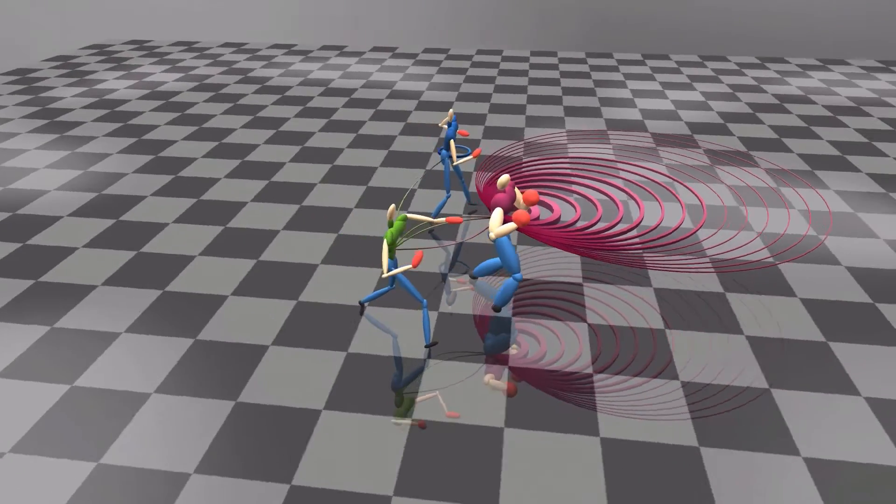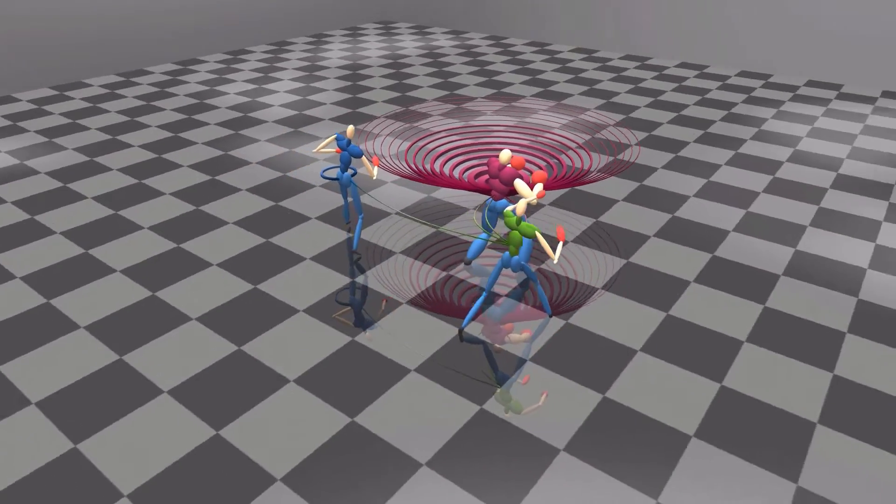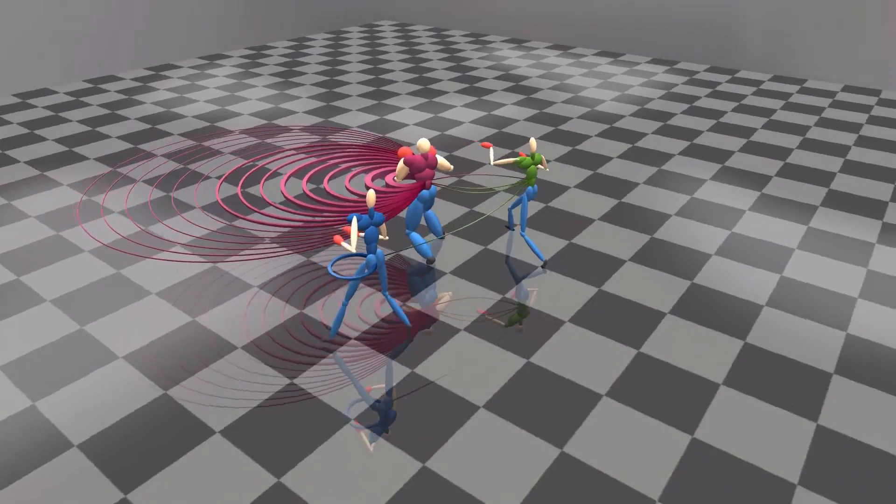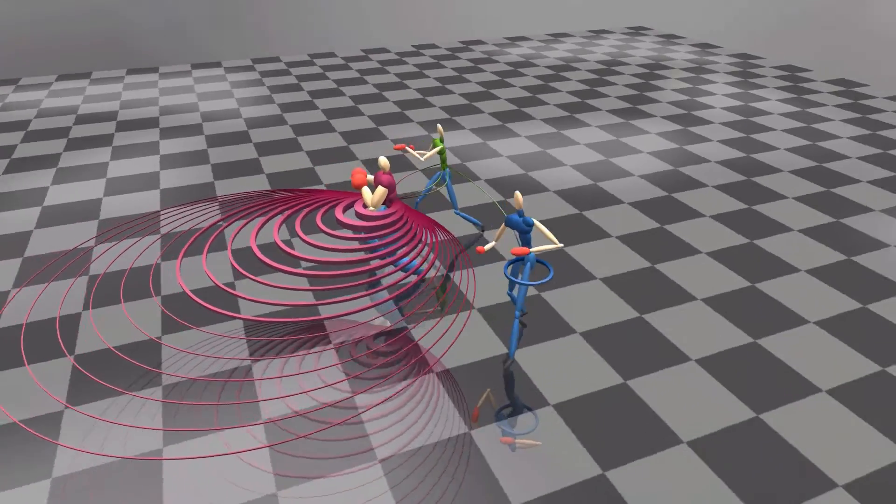We then cut the actions into fat edges and use the thickness of the edge to represent the number of actions within the cluster. This allows us to visualize the variety of the actions.